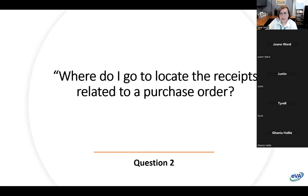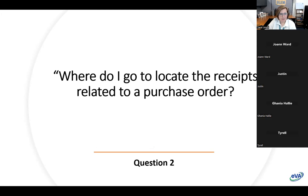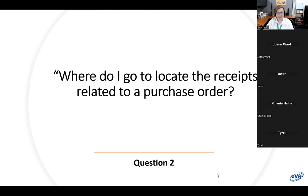Next question: 'Where do I go to locate the receipts related to a purchase order?' The answer is to go into the purchase order itself, and then on the left-hand side menu there's an option called receipts — it has a little truck icon. That's exactly where you would instruct them to go.